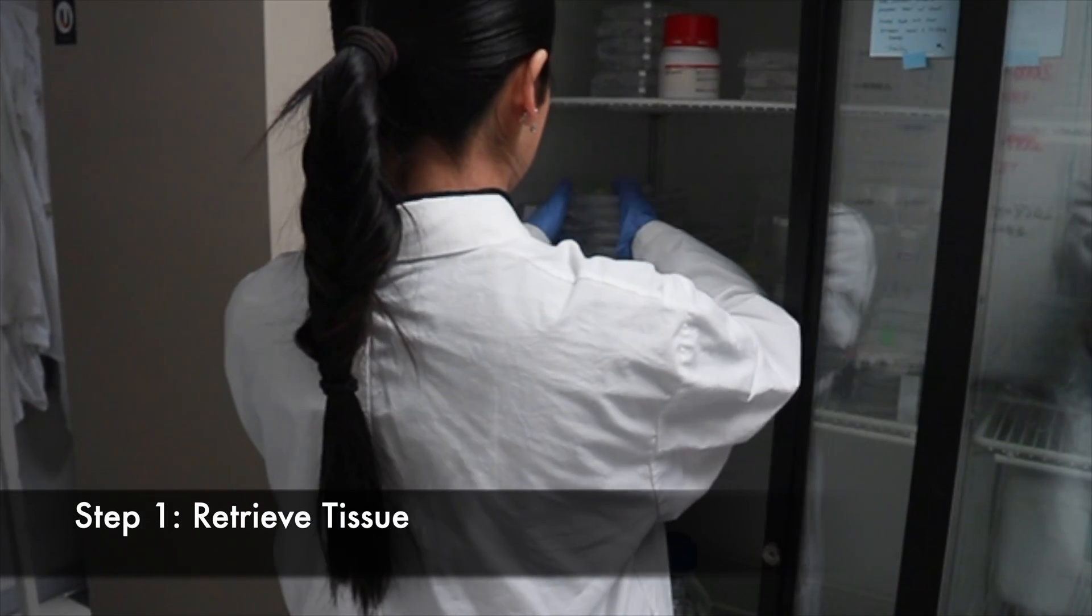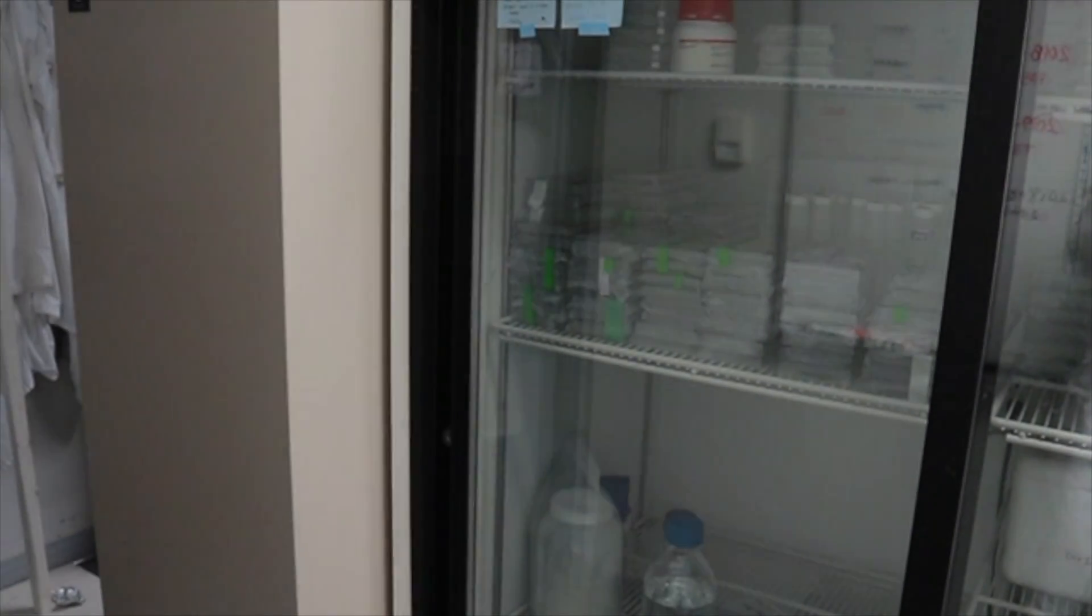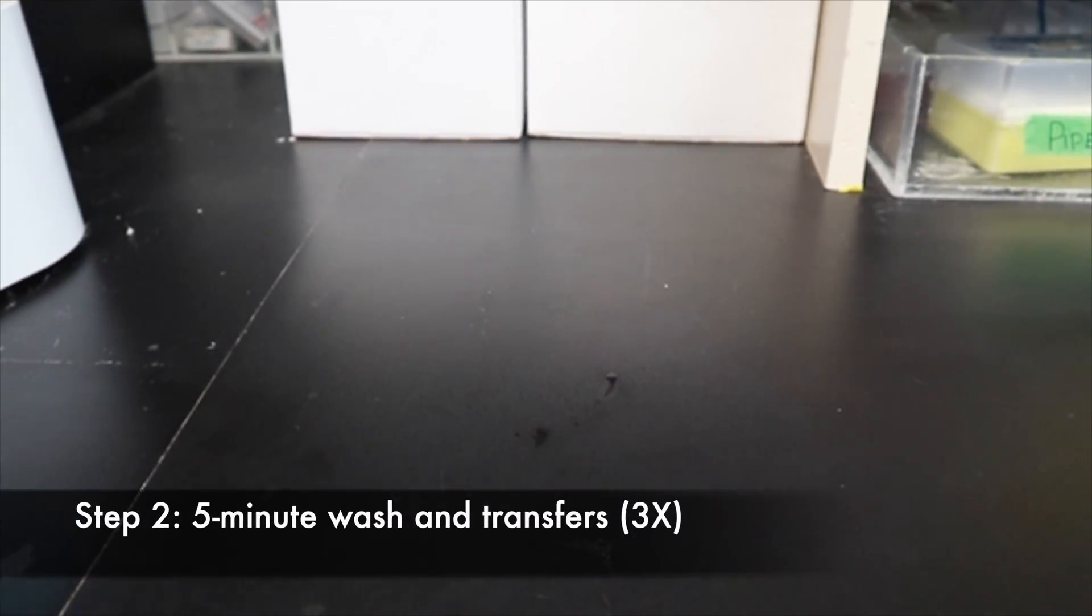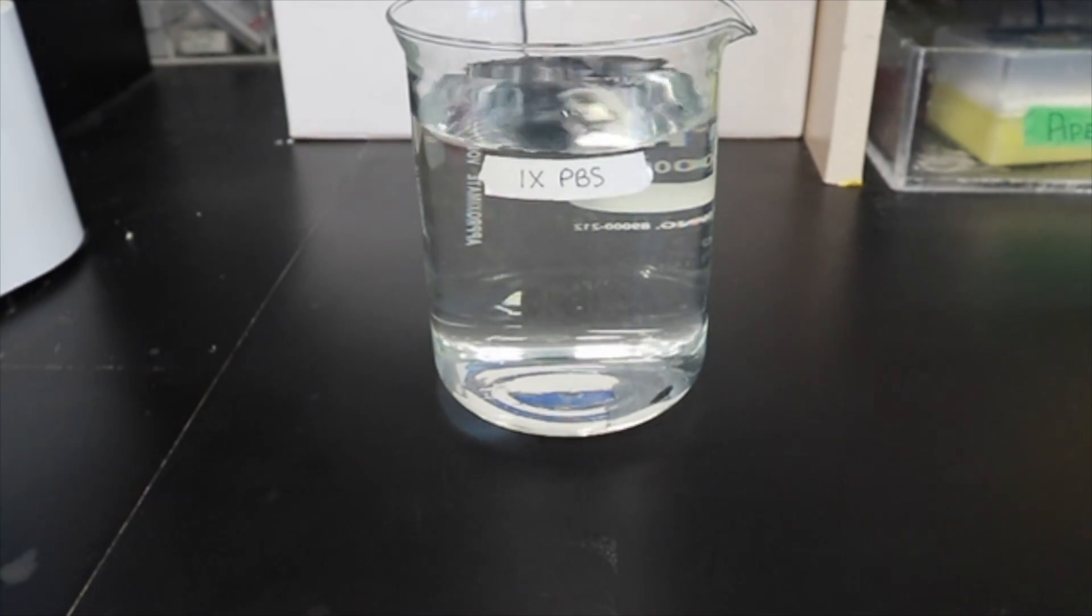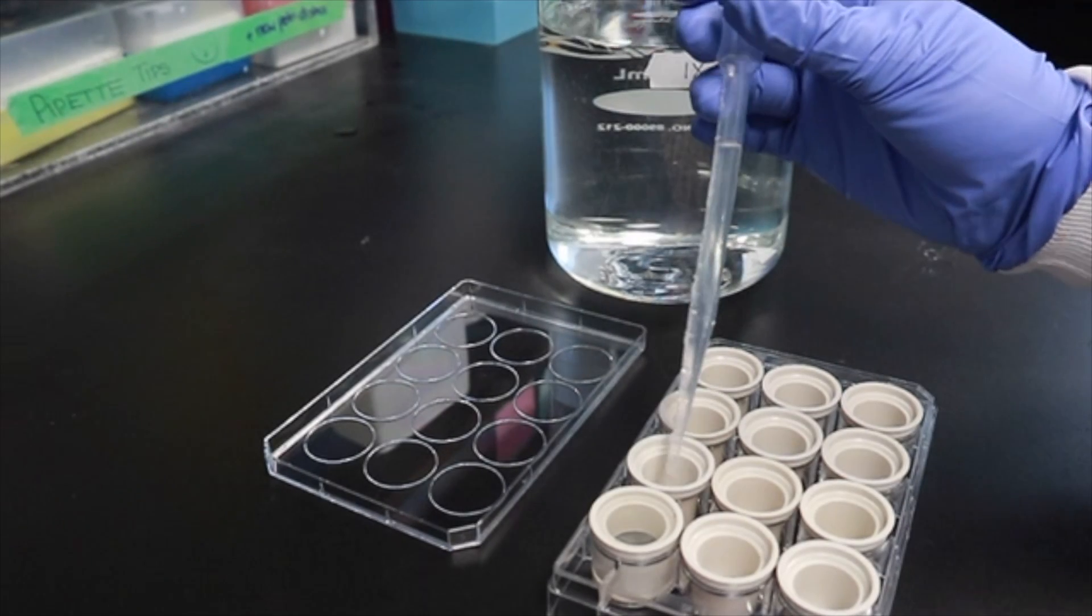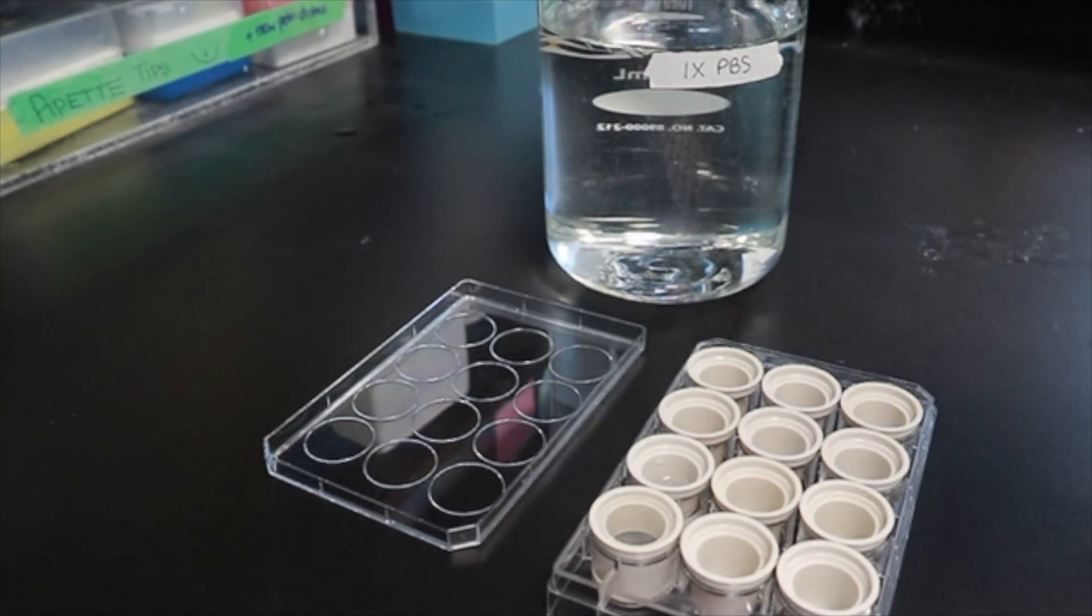To start the staining procedure, retrieve your tissue from its long-term storage. We are using 50-micrometer raw brain sections. In the next step, we will be using 1X PBS, or phosphate-buffered saline, which is an isotonic buffered salt solution used to wash cells, remove unbound reagents, and increase the clarity of your stain.